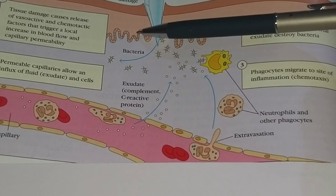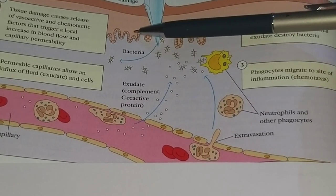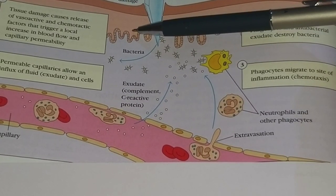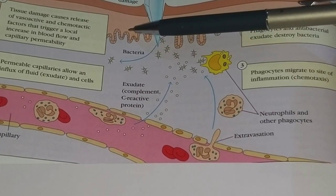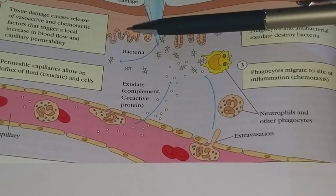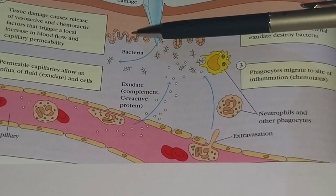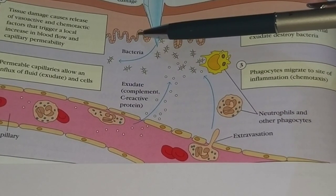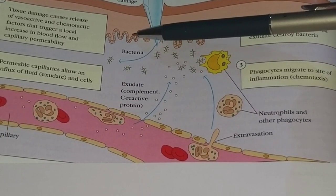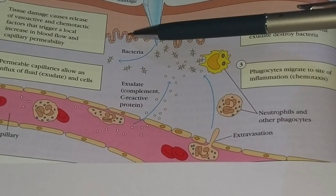Vessels become more permeable — vascular permeability gets increased — and it leads to leakage of fluids from the blood vessels, resulting in edema, meaning accumulation of fluid. Tissue leukocytes start to adhere to the endothelial cells in the inflamed region and pass through the capillary walls into the tissue spaces. This process is known as extravasation.